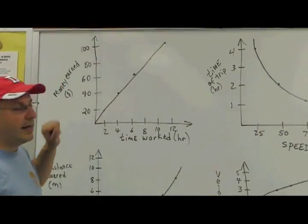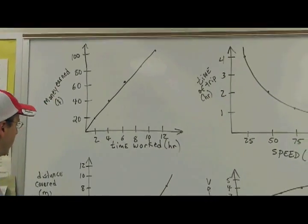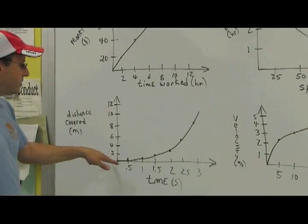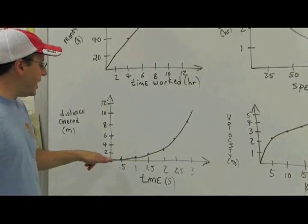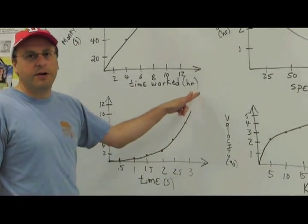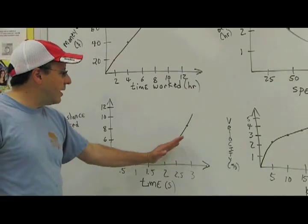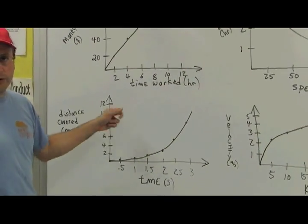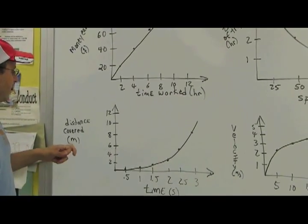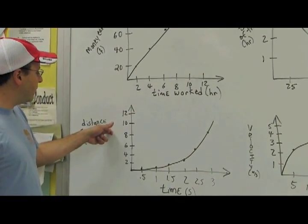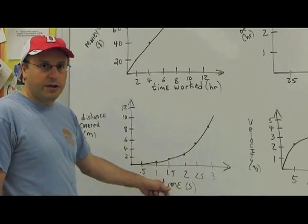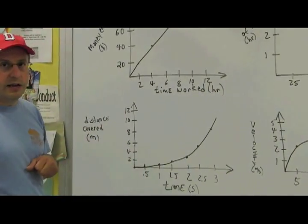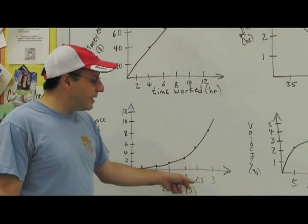This graph down here also goes up but it goes up at an increasingly steep rate. So the slope starts out gradual and becomes steeper as I go along. This is known as a squared graph. This is telling me as I fall in free fall, the more time I'm falling the greater the distance I cover. If I double the amount of time that I'm falling, I will cover four times as much ground.